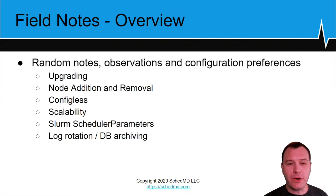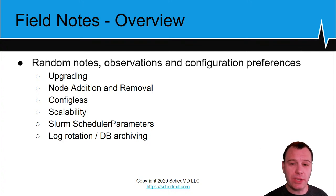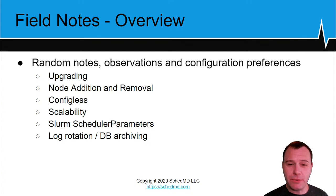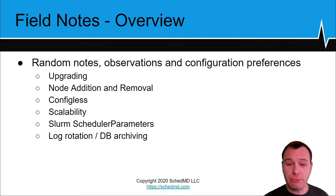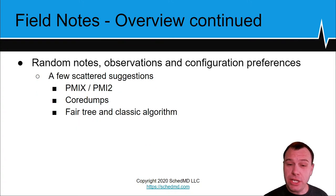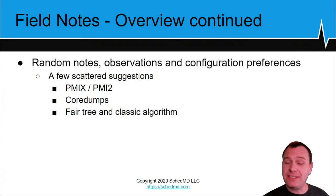Going over my agenda: the topics are somewhat grouped together, though I split off into more non-related topics toward the end, labeled as random notes and observations. We will cover best practices when upgrading, adding and removing nodes, a new 20.02 feature called configless, common scheduler parameters related to scalability, log rotation, database archiving, highlighted points related to PMIx and PMI2, a note on core dumps, and fair tree versus classic tree algorithm.